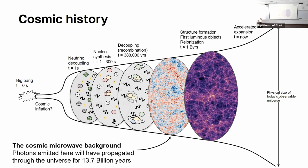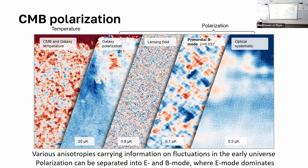Before recombination, the universe was essentially in a plasma state where you couldn't get free propagation of light. As soon as free propagation became possible — because of the recombination of free electrons with atoms — that's when we start to see this background. Apart from anisotropy, there are also anisotropies in the polarization of the Cosmic Microwave Background, caused by different densities at different points of the universe.